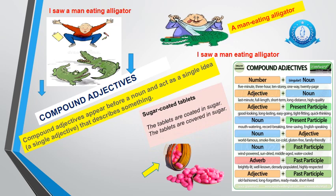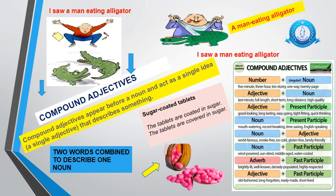For example, there are tablets in front of us and they're coated in sugar. So we say the tablets are covered in sugar — we can shorten this and use a compound adjective: sugar-coated tablets. It means the same thing, that these tablets are covered in sugar, but we've shortened it and made the meaning a little clearer. And with the hyphen we have shown that sugar-coated is now one word, not two words.